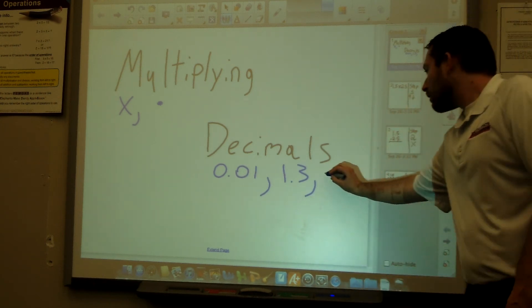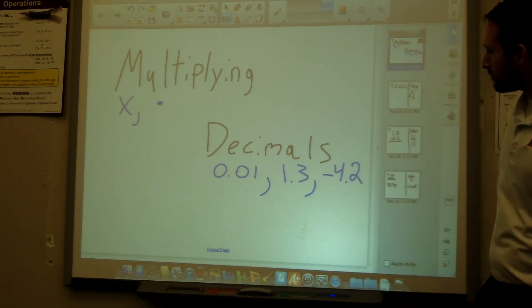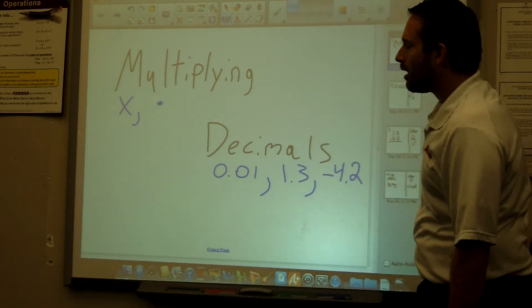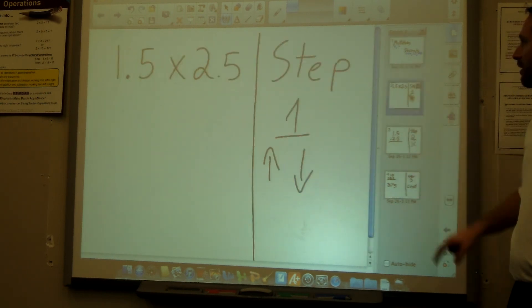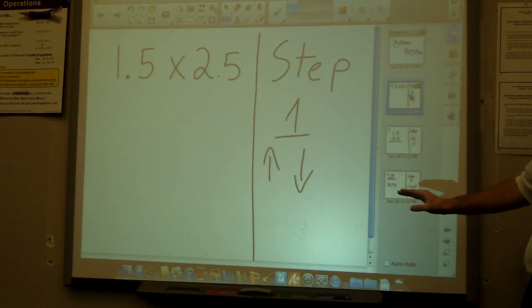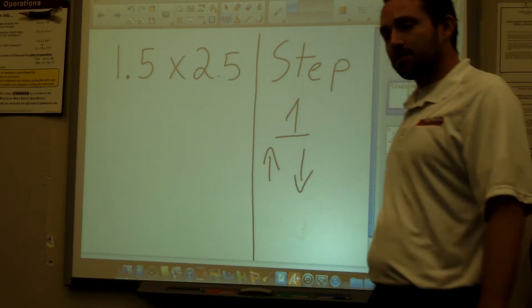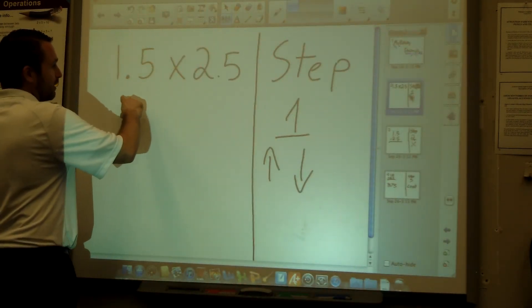Well then let's try this out. I have 1.5 times 2.5. Step 1: write this down up and down. It's kind of hard to solve this without writing it up and down, so let's first write it up and down. Doesn't matter which one's on top, but let's write it up and down: 2.5 times 1.5. Done, that's step 1.